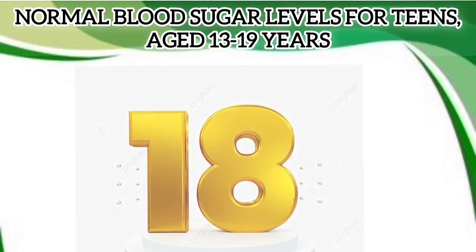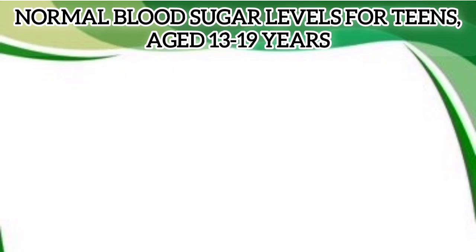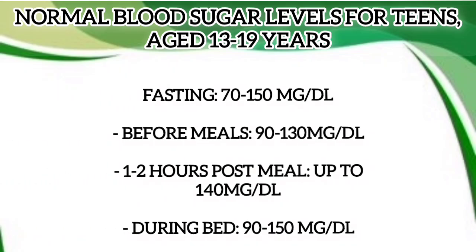Normal blood sugar levels for teens aged 13-19 years: fasting, 70-150 mg/dL; before meals, 90-130 mg/dL; 1-2 hours post-meal, up to 140 mg/dL; during bedtime, 90-150 mg/dL.